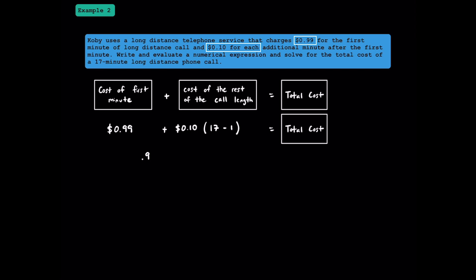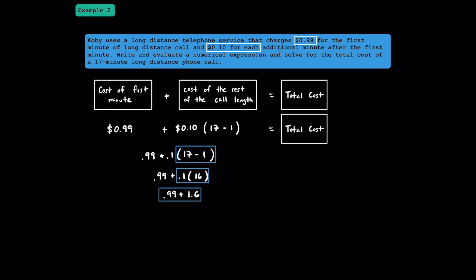Without units, we can write 0.99 plus 0.1 times 17 minus 1. Following the order of operations, we start with 17 minus 1, which is 16. So we have 0.99 plus 0.1 times 16 — the 16 minutes after the first minute each cost 10 cents. Multiplying 0.1 by 16 gives $1.60, so we write 0.99 plus 1.6. Adding 99 cents to $1.60 gives us $2.59. The total cost of this phone call is $2.59.